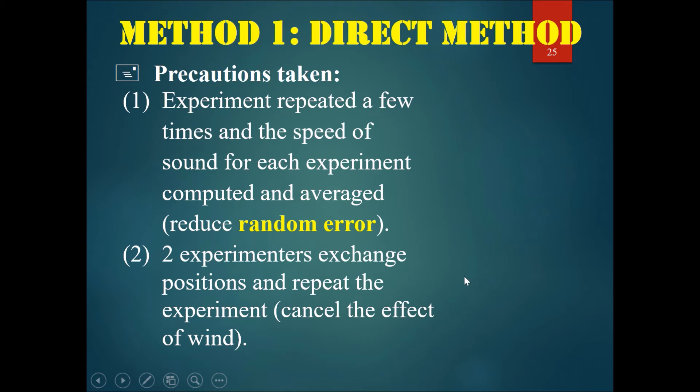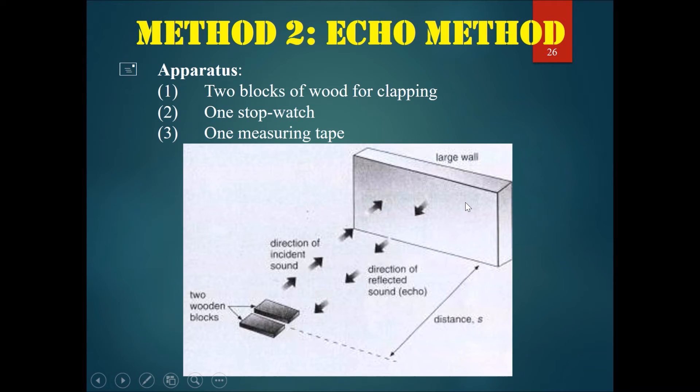Method two is the one that we use more often to measure the speed of sound in air. This one is a bit more complicated, so please try to focus. Normally we use two blocks of wood for clapping because they produce the best clapping sound—it will be a sharp sound. Then we have one stopwatch and one measuring tape. Then we need to find a large flat wall.